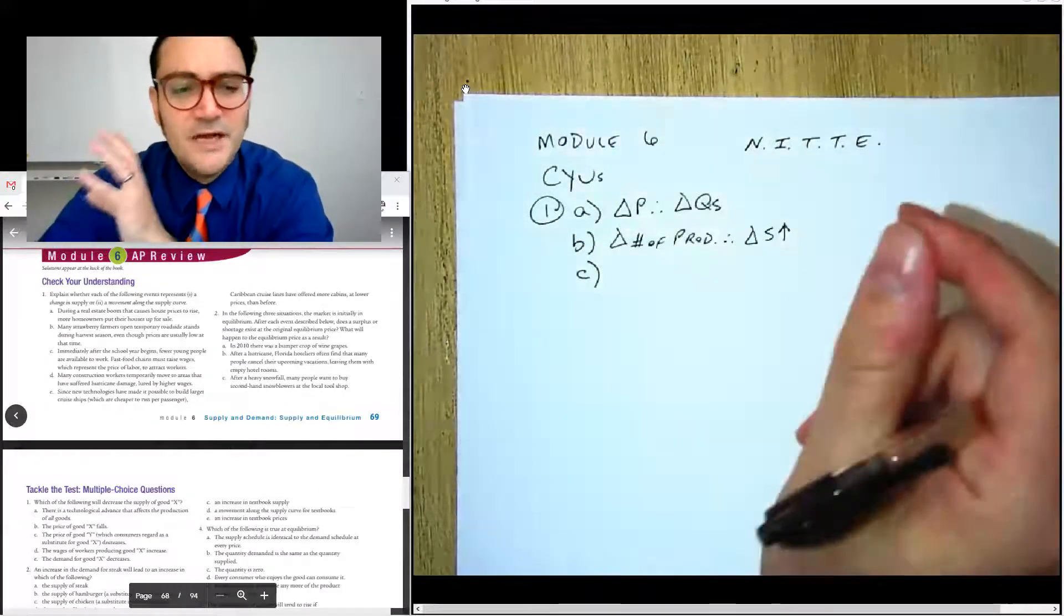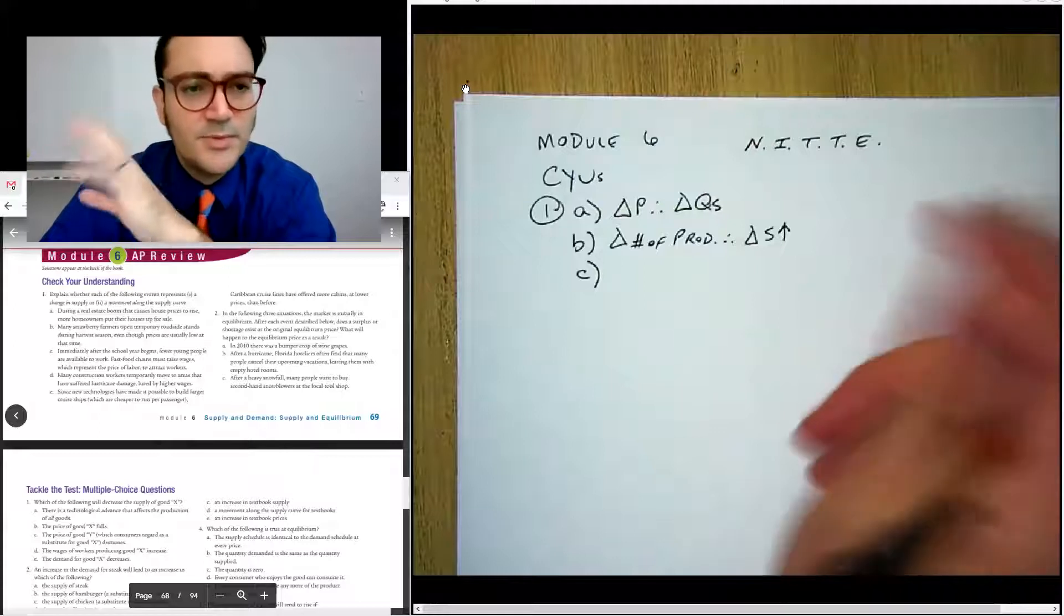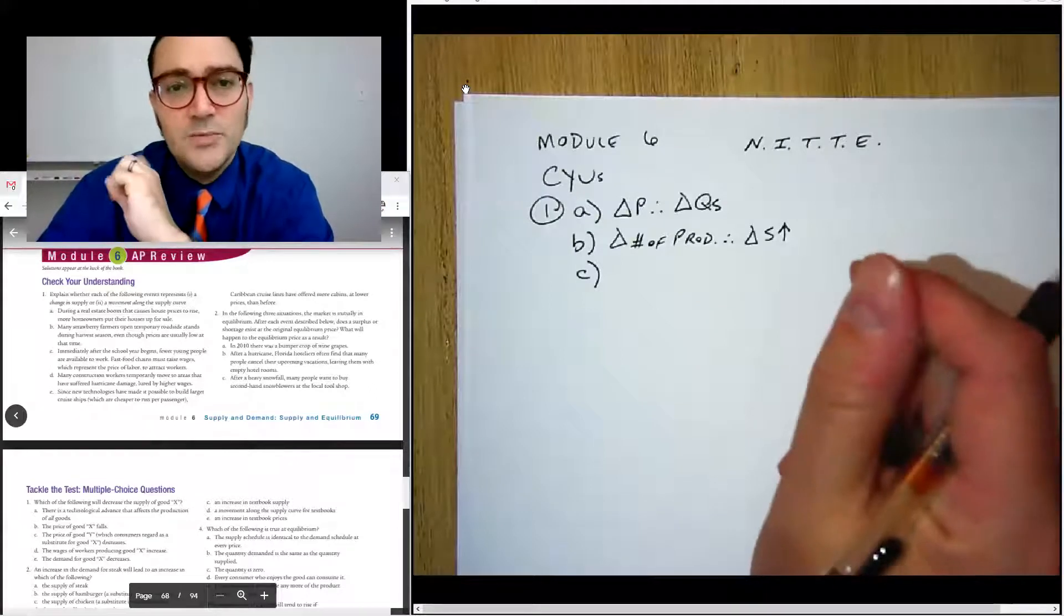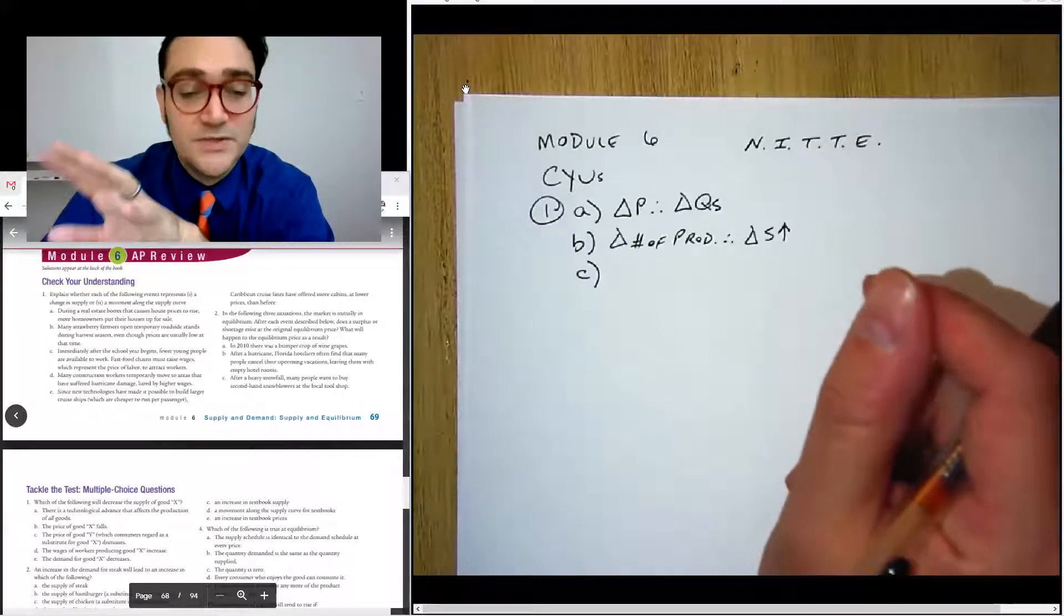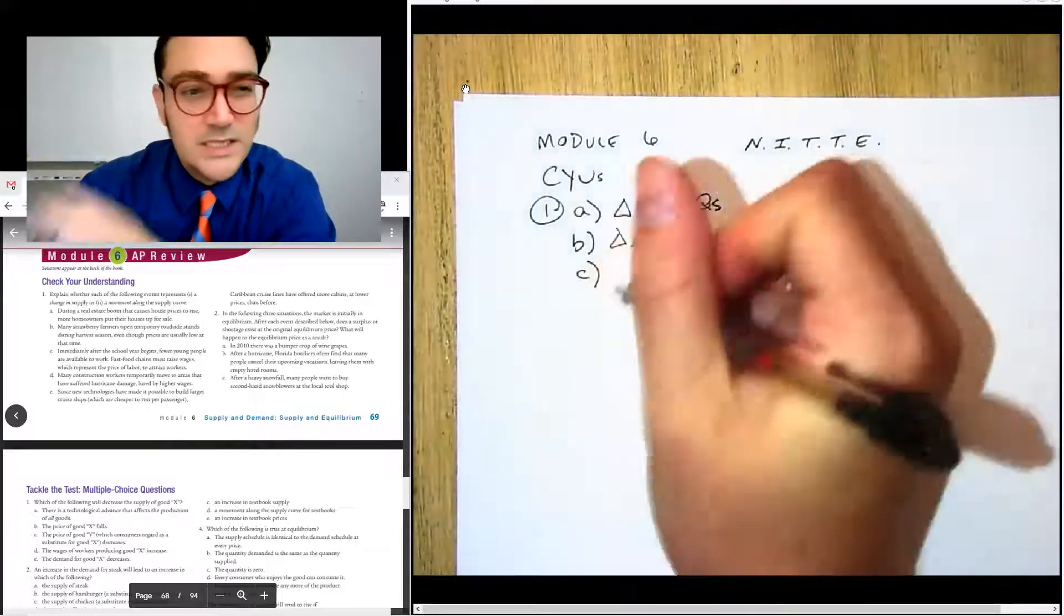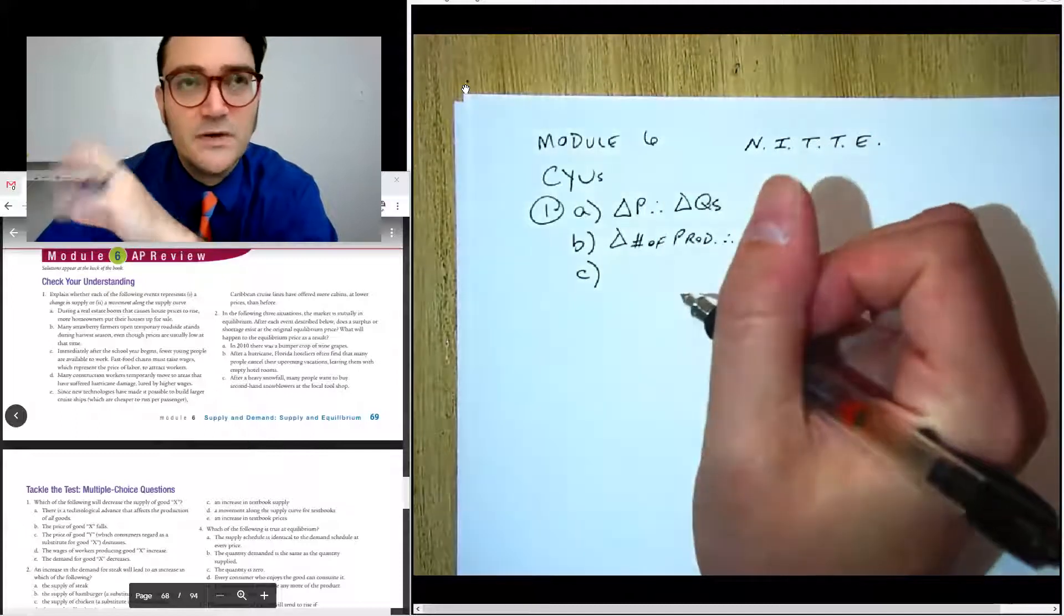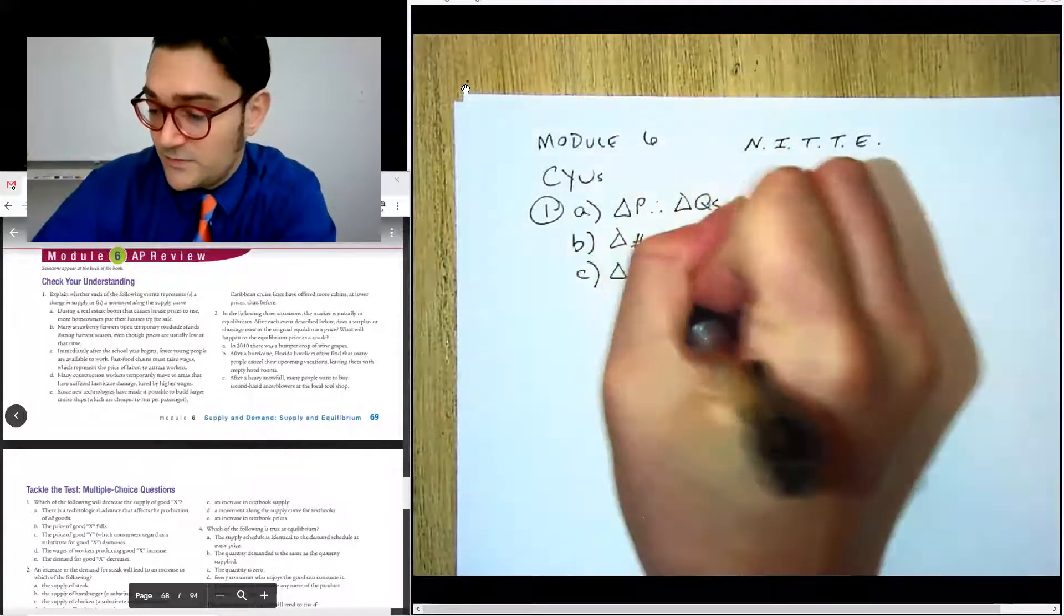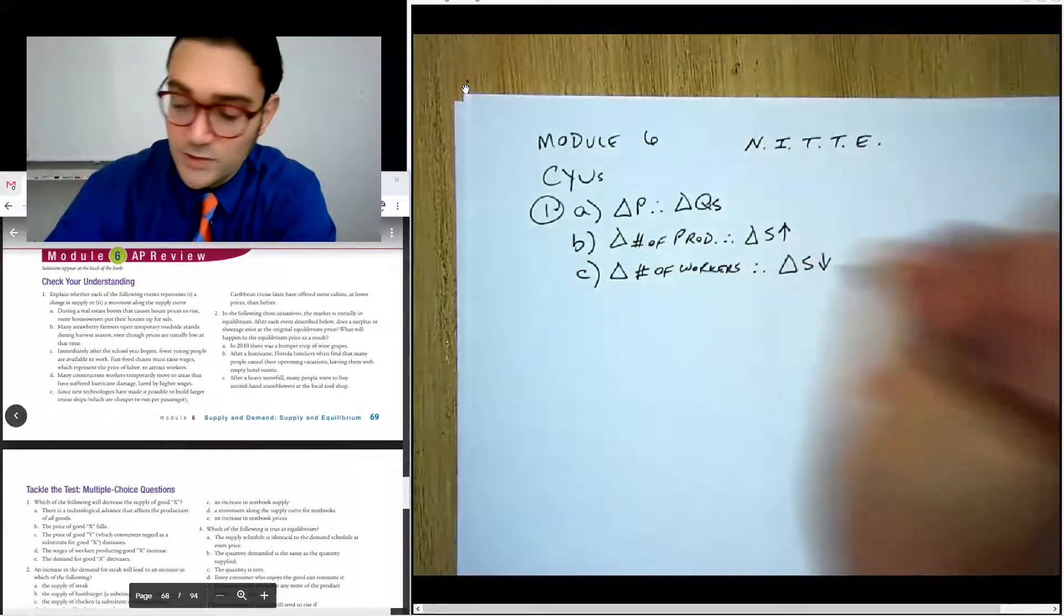For C, it says immediately after the school year begins, fewer young people are available to work. Fast food chains have to raise wages, represent the price of labor, attract workers. So for this one, this is a weirdly worded question and I don't care for it for that reason. But thinking about this, it's really just saying that at any given wage, doesn't matter what the wage is, there are fewer workers available. So that's actually the change in supply. So we can say, and it's the change in supply of the workers, actually. If you were thinking about it from the perspective of the fast food company, it's slightly different, but the supply of the workers is actually changing. So change in number of workers, which that's kind of like the number of producers is a change in supply of the workers. We'd say it's a decrease.